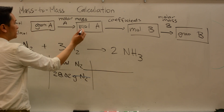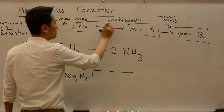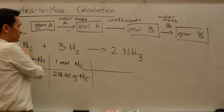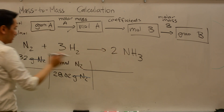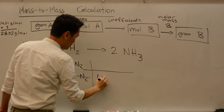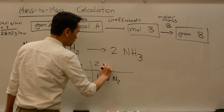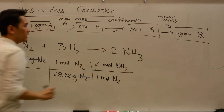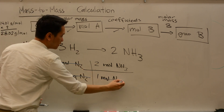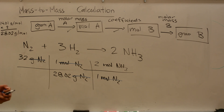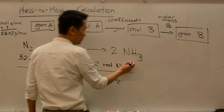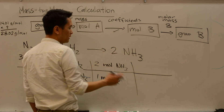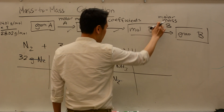We keep going — from moles of A to moles of B using the coefficients. I ask myself: what is the relationship between nitrogen and ammonia? It's one to two. So one mole of nitrogen gives me two moles of ammonia. The units cancel out, confirming we're on the right track. Now we know the moles of ammonia, but the question asks for grams of ammonia, so we need to use the molar mass of ammonia.